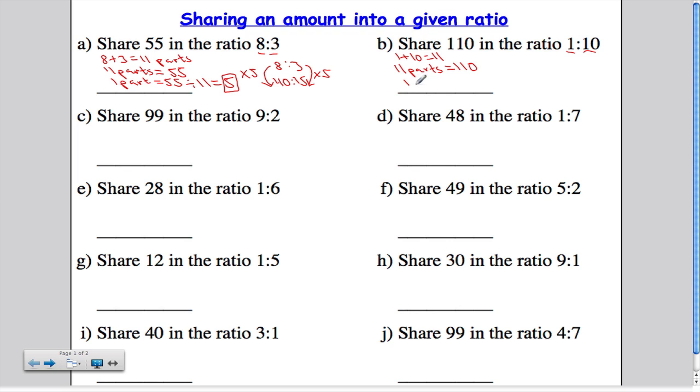I've got to work out what 1 part is. And 1 part is going to be 110 divided by 11. And 110 divided by 11 is 10. So each part in the ratio is going to be equal to 10. This is the important number here.